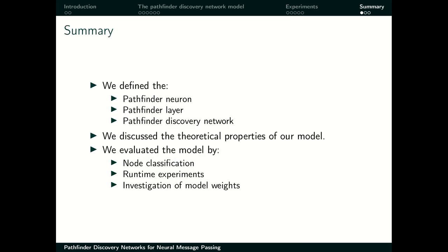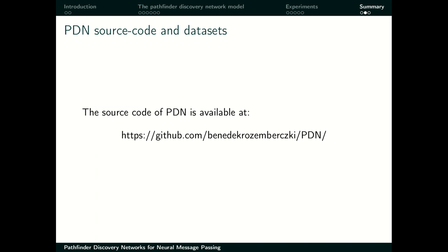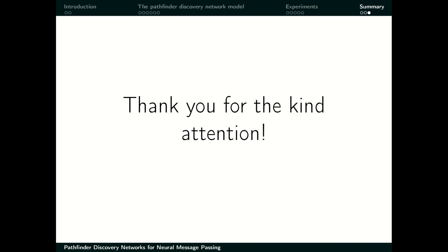To summarize: we defined the pathfinder neuron as a basic building block for the pathfinder layer. The pathfinder layer and graph neural network together form a pathfinder discovery network. We discussed theoretical properties of this model, evaluated it on node classification of multiplex graphs, ran runtime experiments, and investigated how the model weights can be interpreted as attention. The source code of PDN is publicly available with the datasets at github.com/benedekrosenbertsky/pdn. Thank you for your attention and have a nice day!